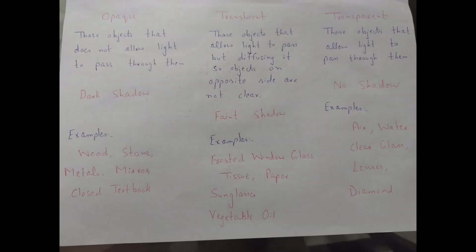A very important point about shadows is about the type of object. There are three types of objects: opaque, translucent, and transparent. Only when opaque objects come in the path of light will a shadow be formed, because they block the light. Opaque objects are those that do not allow light to pass through, due to which they block the light and a dark area forms — that is called a shadow. Examples of opaque objects include a bat, ball, metals, and wood.